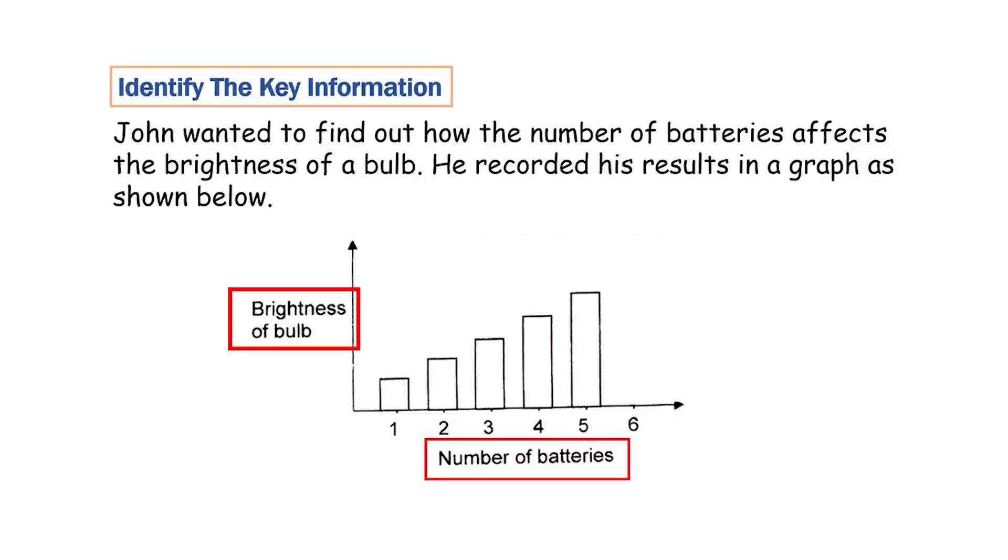Now when you are looking at the graph, you will notice that there are two labels, the one at the bottom and the one on top. Now these labels are actually the variables of the experiment.